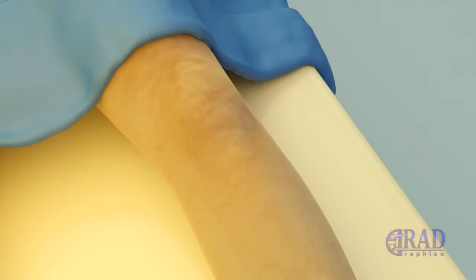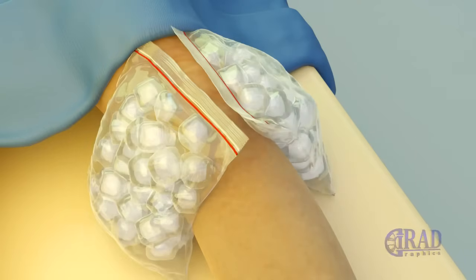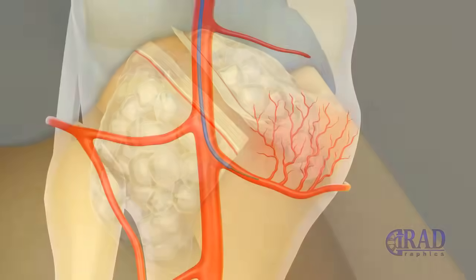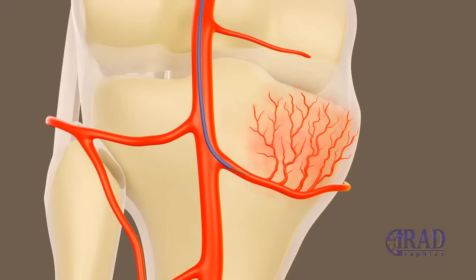At this stage, ice packs are applied to the target knee to minimize the risk of non-target embolization affecting the skin. Once the target vessel is catheterized, the microwire is removed, and genicular artery embolization is performed using microparticles until pruning of the inflammatory and abnormal branch of the genicular artery is achieved.